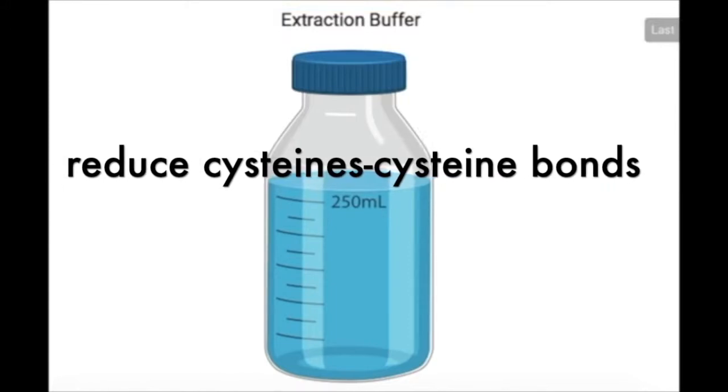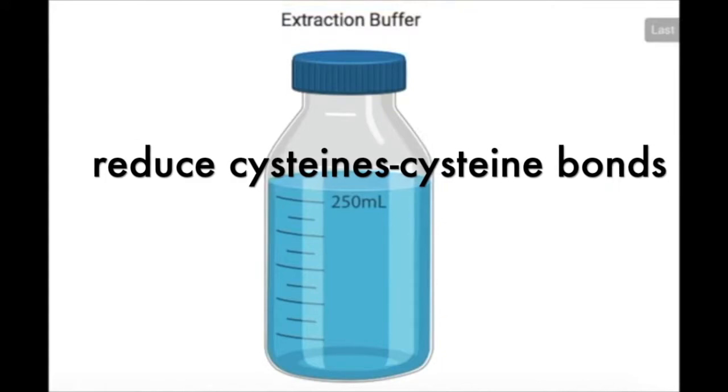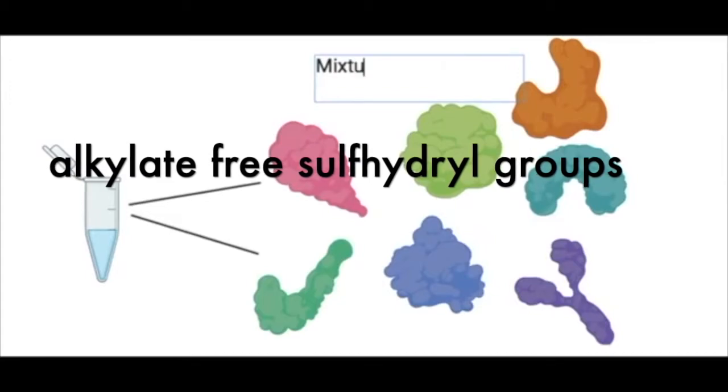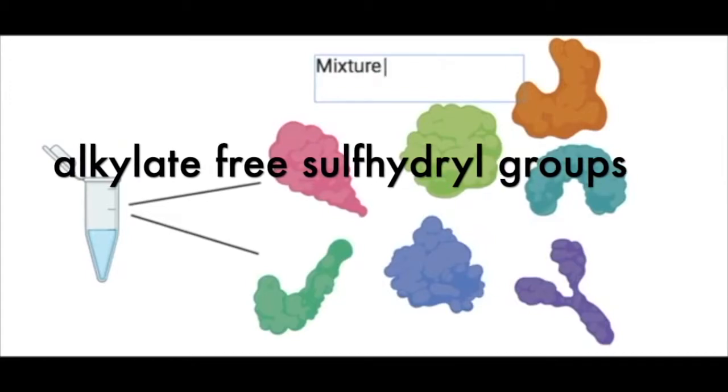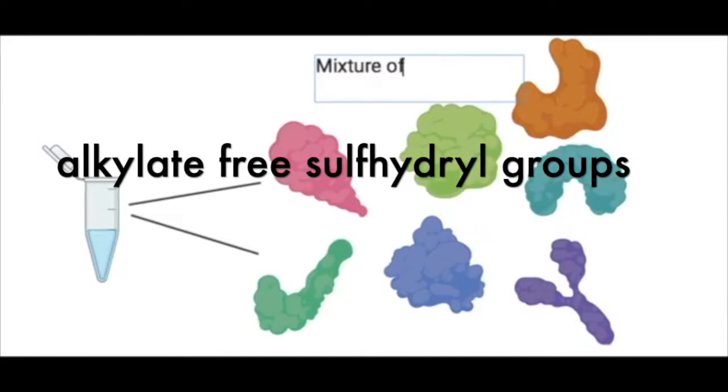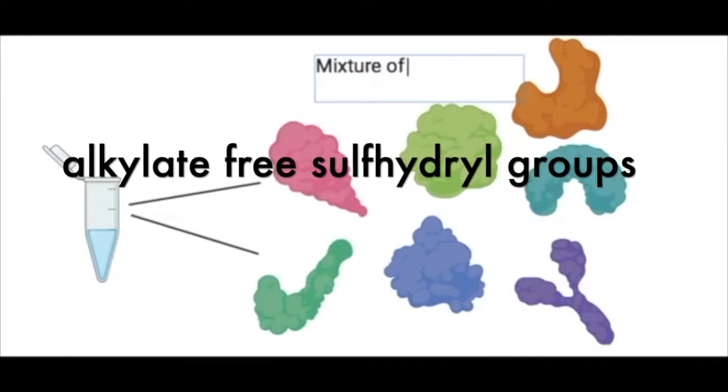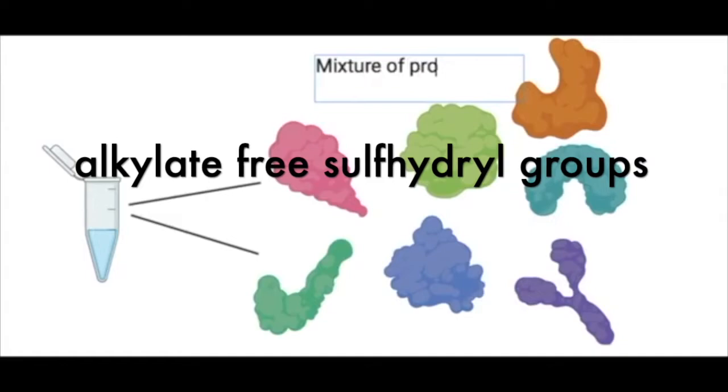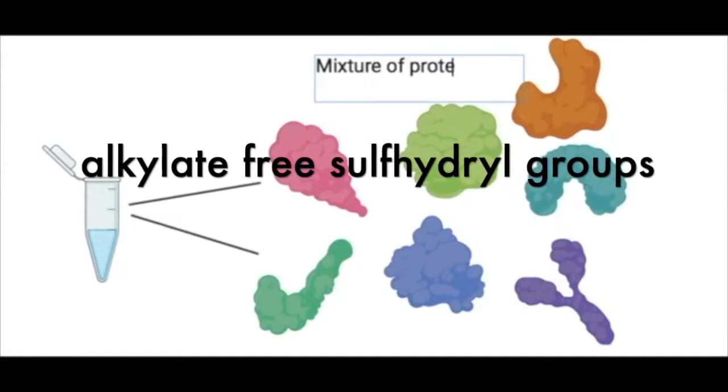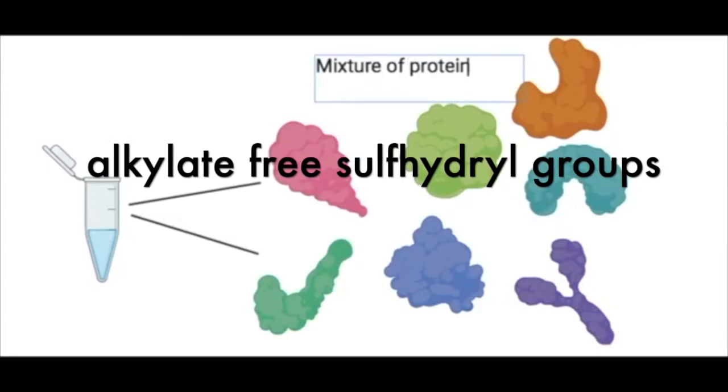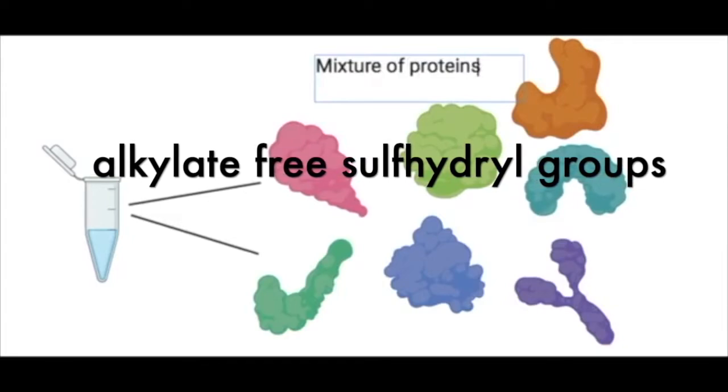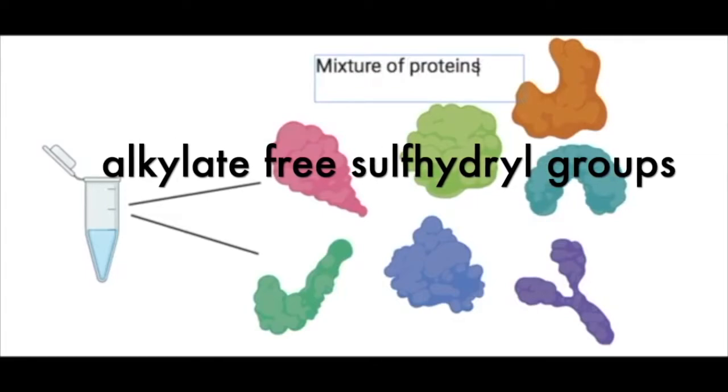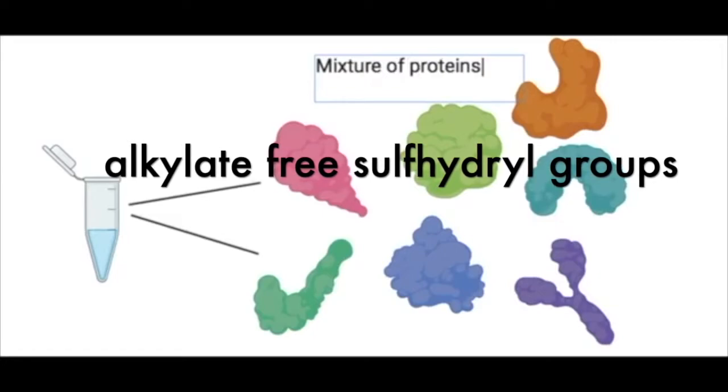The reduction and alkylation steps are to do with the cysteine amino acids. Cysteine amino acids are reduced and then alkylated to stop them from reforming. Reduction and alkylation allows you to irreversibly break bonds between cysteine residues so they don't reform. The point of this is so you don't get peptides that have been linked together by cysteine bonds, which would make it hard to identify what protein they come from, because the databases wouldn't have those structures or peptides linked via cysteines.